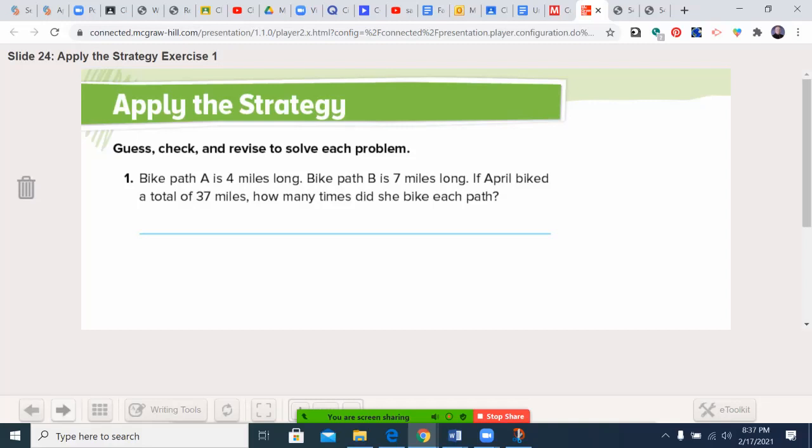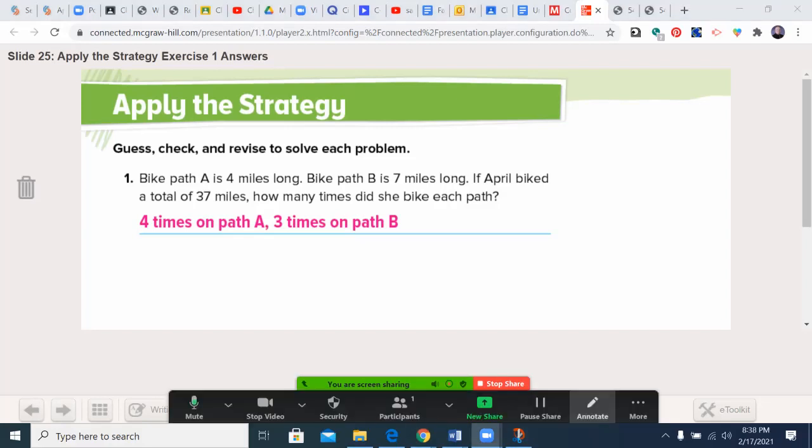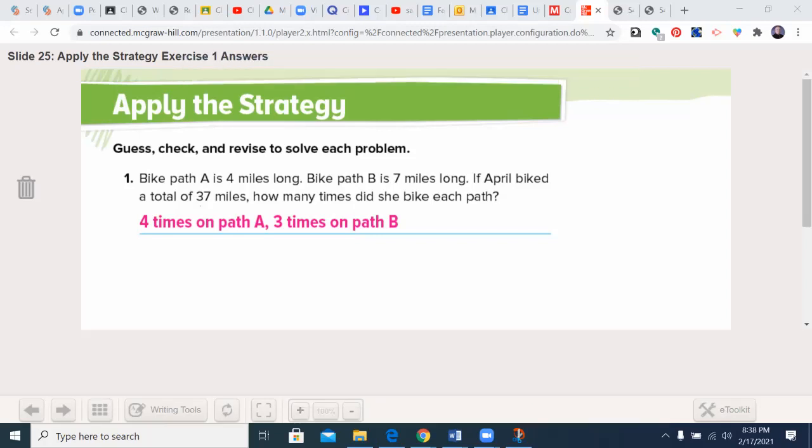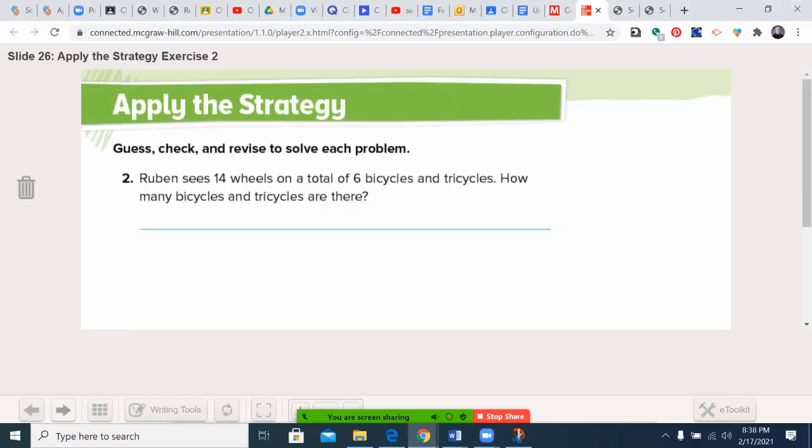Welcome back. Let's see how we did here. Four times on path A, three times on path B. Four times four was 16, three times seven is 21. 21 plus 16 equals 37.